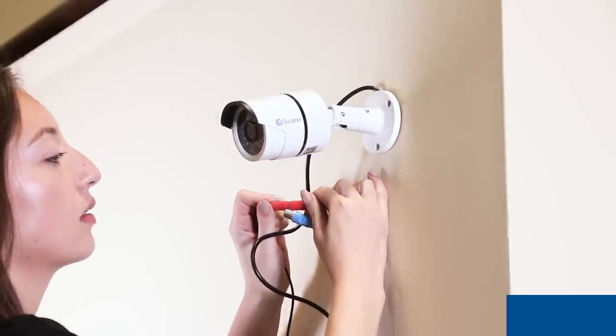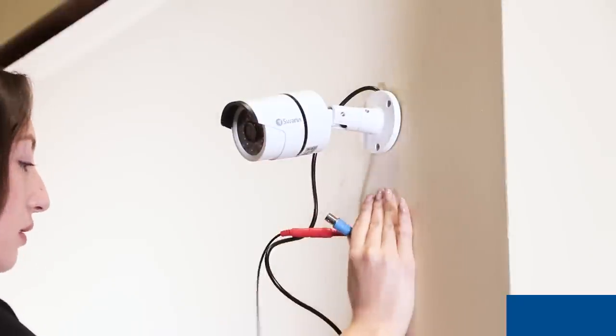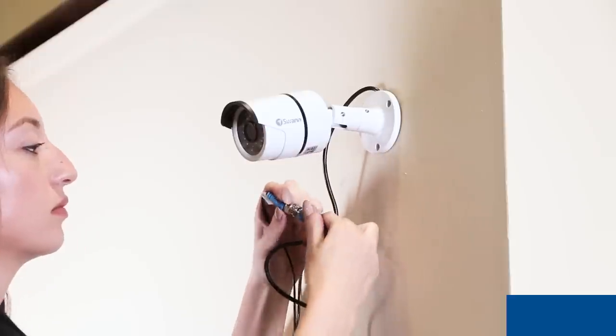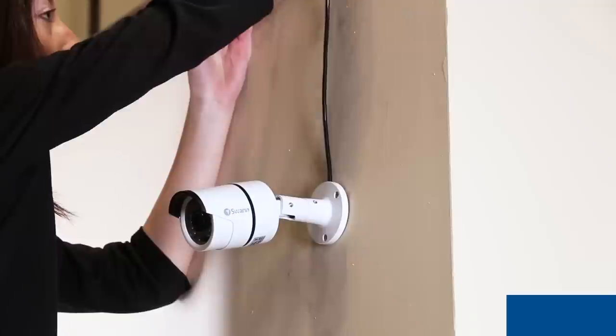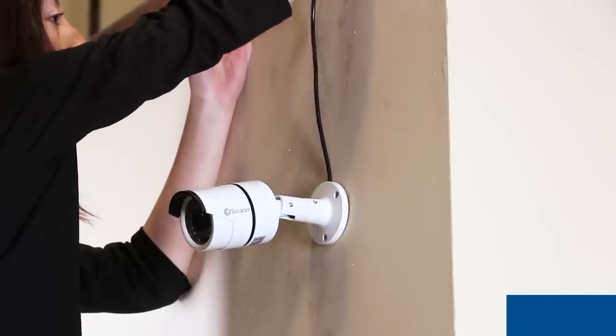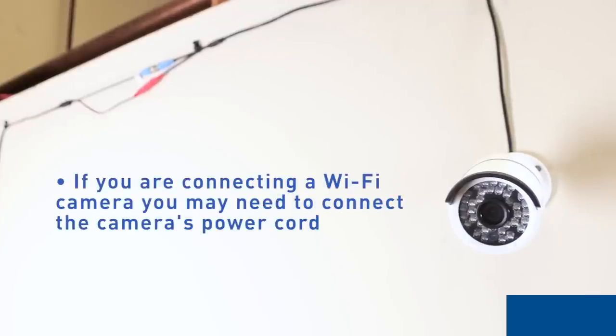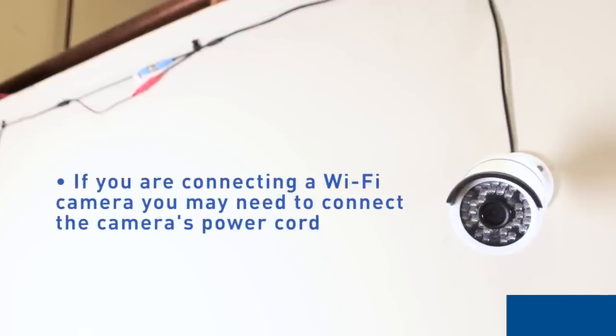Now, with the camera properly mounted, connect one end of an extension cable to the matching plugs on the camera's short cable. Then carefully route the extension cable to the DVR or NVR recording system. If you are connecting a WiFi camera, you may still have to connect the camera's power cord.